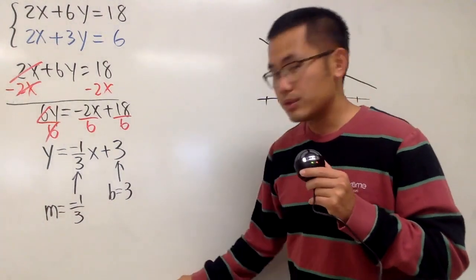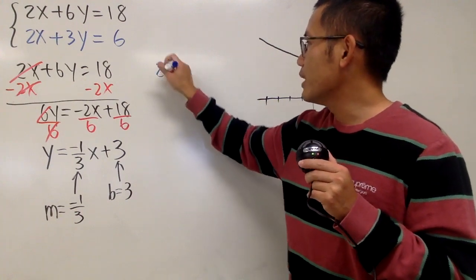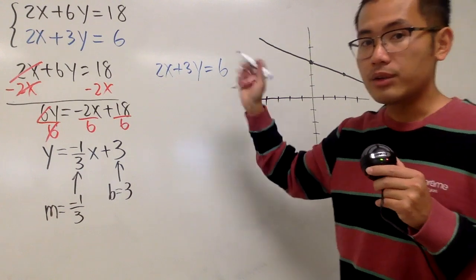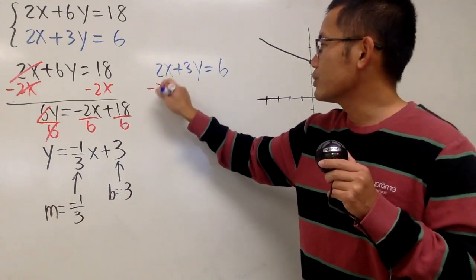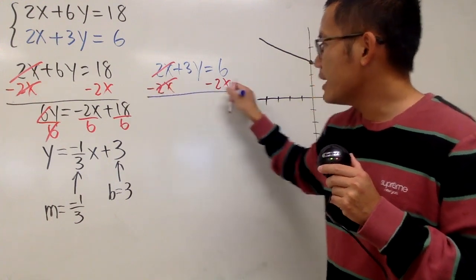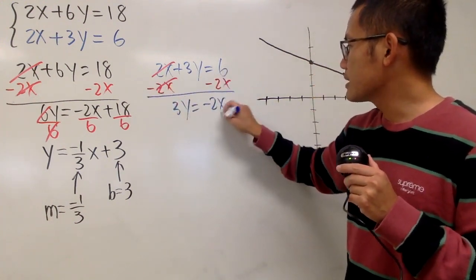Now, for the second one, let's do that in blue, of course. I set this out already. So here we have the 2x plus 3y equals 6. And again, do the same thing. I will have to minus 2x on both sides. So they cancel.